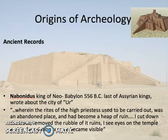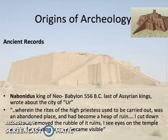We're recalling that in the area of Mesopotamia, the earliest temples erected were called ziggurats. The first record we have of their uncovering was by King Nabonidus, a neo-Babylonian king in 556 BC, who was the last king of the Assyrians.